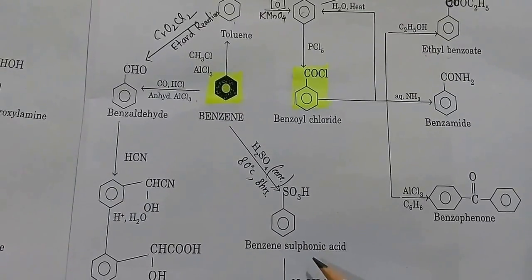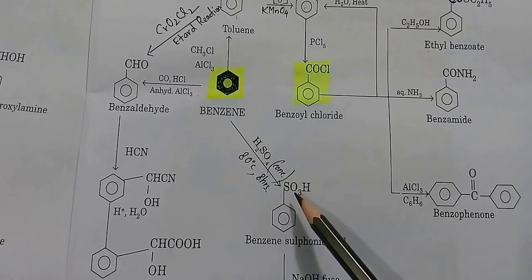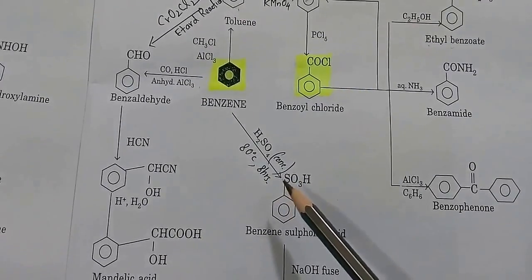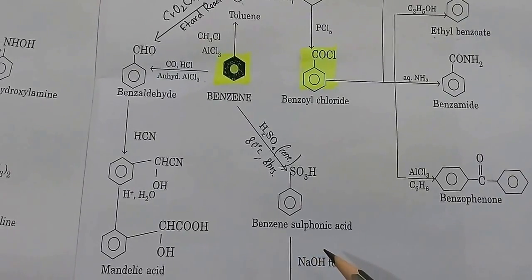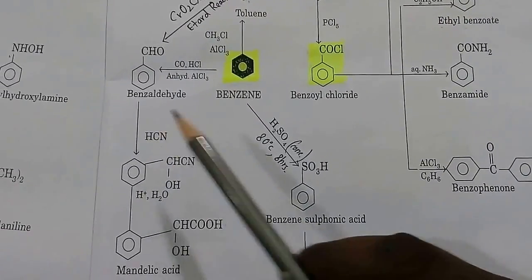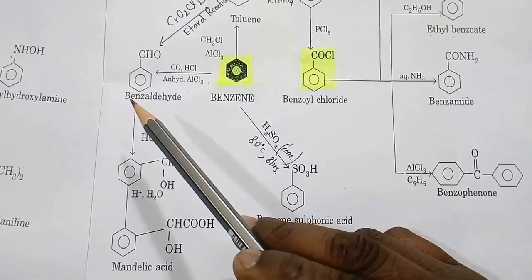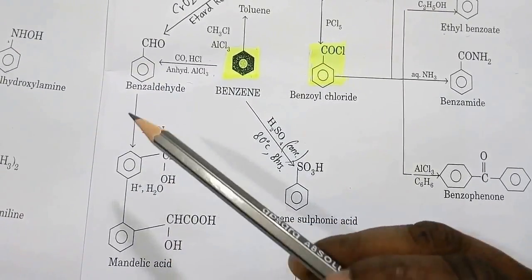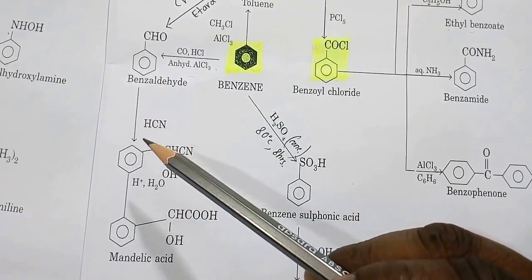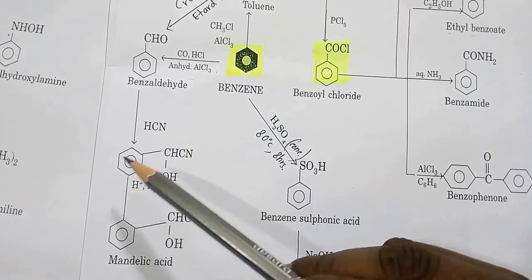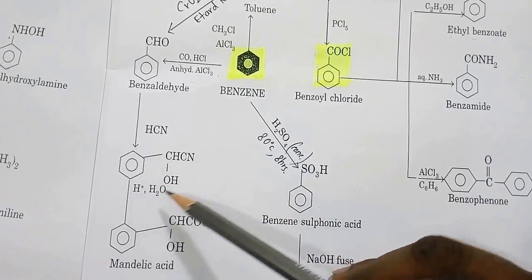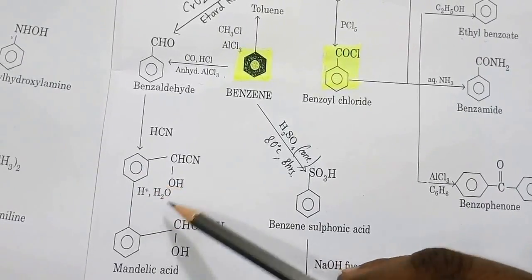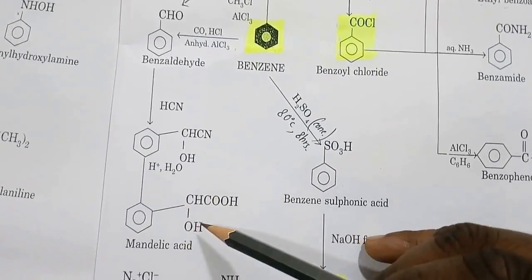Benzene to benzene sulfonic acid: benzene is treated with H2SO4 at about 80 degrees centigrade for 8 hours. From benzaldehyde an important compound mandelic acid can be prepared: benzaldehyde treated with HCN gives benzaldehyde cyanohydrin, and when that cyanohydrin is hydrolyzed in acidic medium we get mandelic acid.